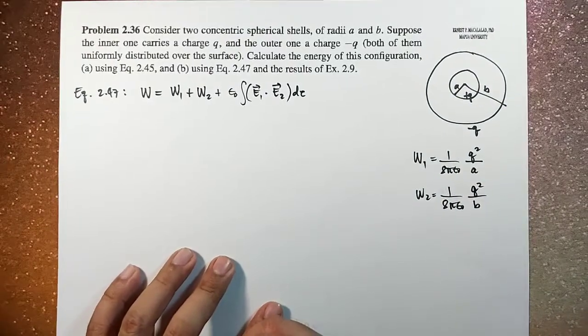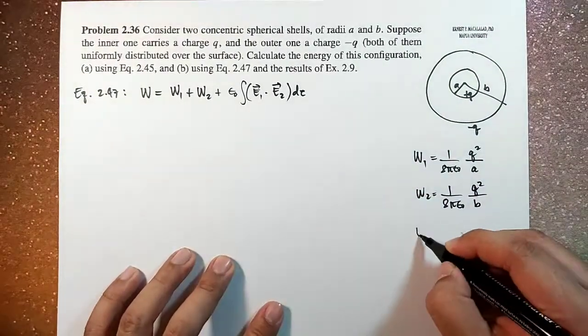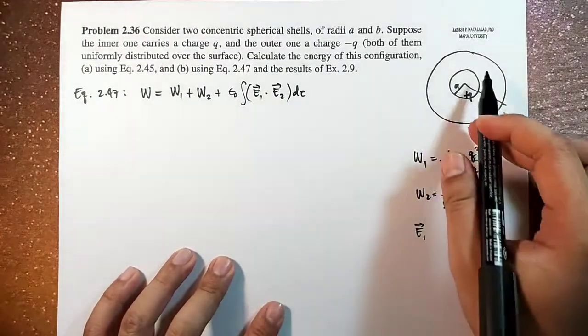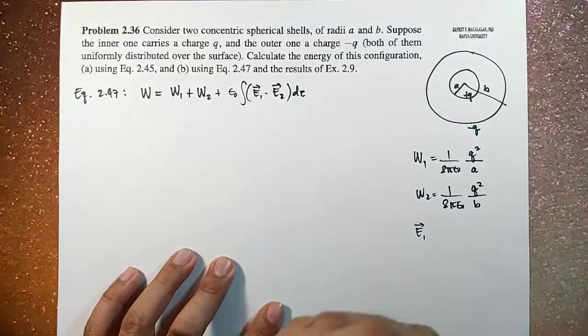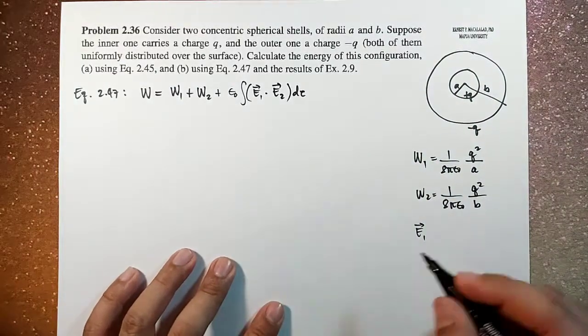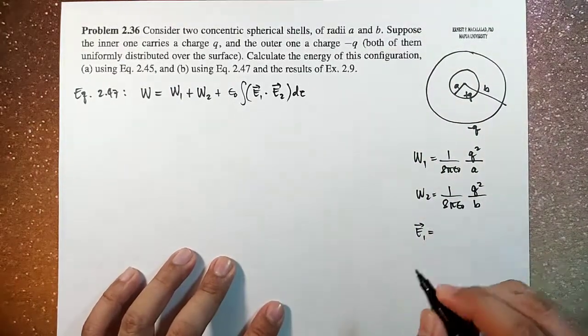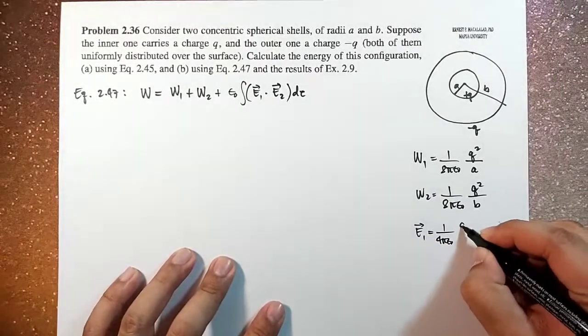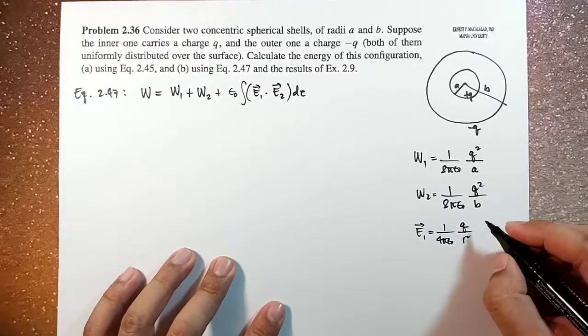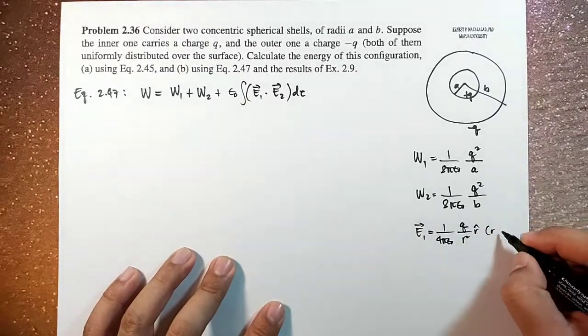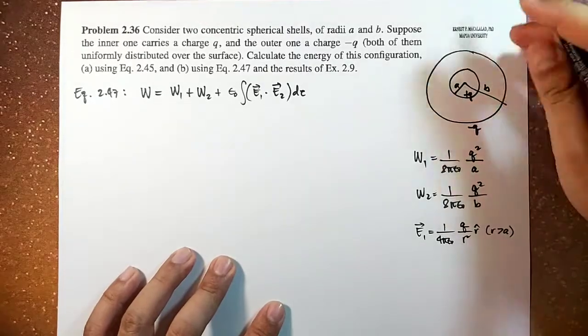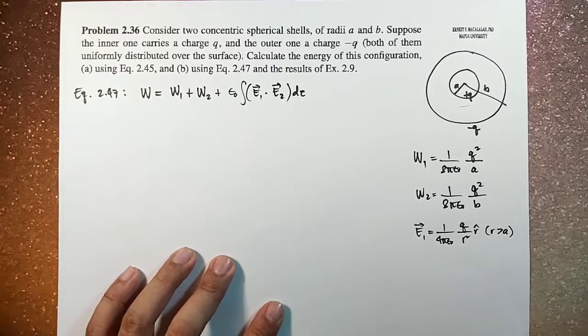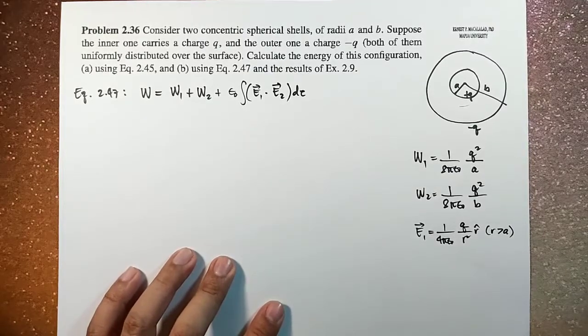Okay, so E1 is for R greater than A because remember for a shell, there is no electric field inside. So we are only going to consider the electric field outside the shell.